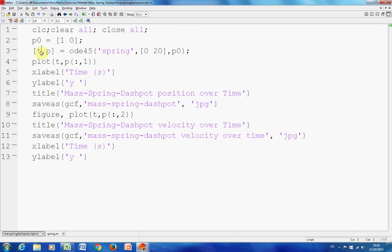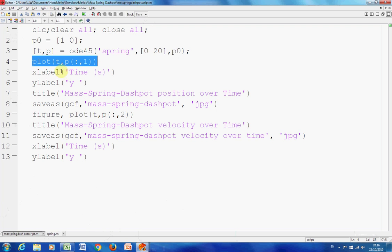We get time and we get P. Remember, P is two columns. On this one, that says plot time of the X, all the rows, column one. The first column will be the solution to the velocity. The solution to the velocity is the displacement.